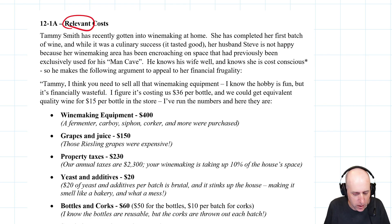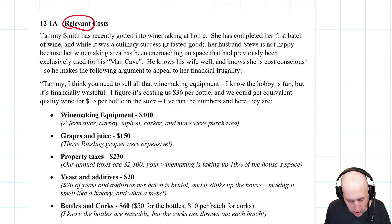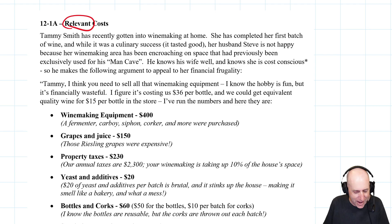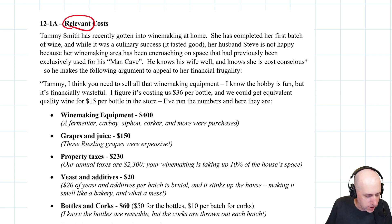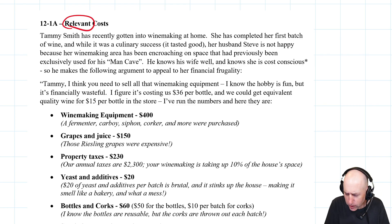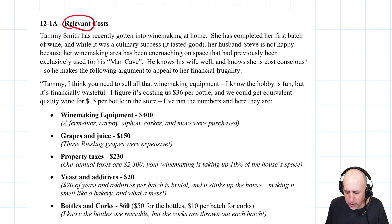Tammy Smith has recently gotten into winemaking at home. She has completed her first batch of wine, and while it was a culinary success — it tasted good — her husband Steve is not happy because her winemaking area has been encroaching on the space that had been previously exclusively used for his man cave. He knows his wife well and knows that she is cost conscious, so he makes the following argument to appeal to her financial frugality.